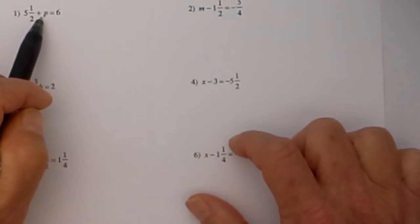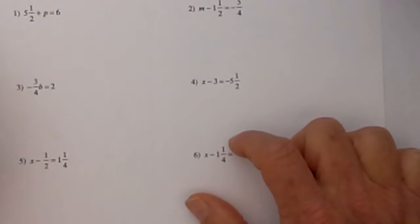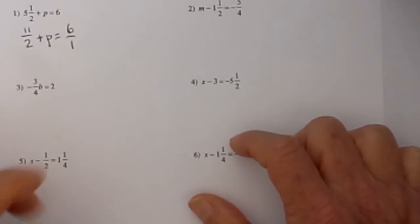With this first one we know in order to solve the one step equation we need to get p by itself. In order to do that we can subtract 5.5 from each side. Before we get started I would like to convert this to an improper fraction. 2 times 5 is 10 plus 1 is 11 halves plus p is equal to 6 over 1.